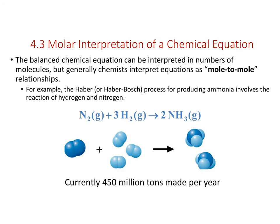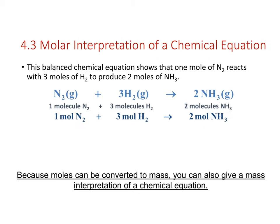We'll do a few more molar calculations using mole-to-mole ratios. A classic example is the Haber process, used to make ammonia: nitrogen gas reacts with hydrogen gas to produce ammonia. One mole of nitrogen reacts with three moles of hydrogen and produces two moles of ammonia. On a molar level, one mole of nitrogen reacts with three moles of hydrogen to produce two moles of ammonia.